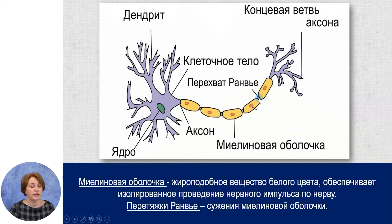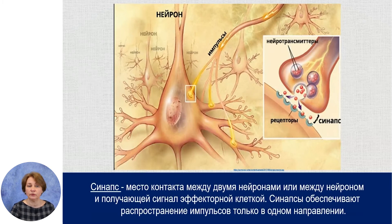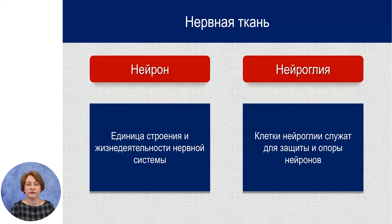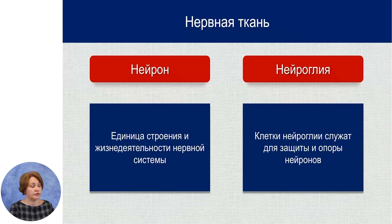Перетяжки Ранвье – это сужение миелиновой оболочки. Ещё один термин – синапс. Это место контакта между двумя нейронами или между нейроном и получающей сигнал эффекторной клеткой, то есть клеткой рабочего органа. Синапсы обеспечивают распространение импульсов только в одном направлении. Основу нервной системы составляет нервная ткань, которая состоит из нейронов. Нервные клетки окружены клетками нейроглии, которые служат для защиты и опоры нейронов. Нейроны и нейроглия образуют нервную ткань.